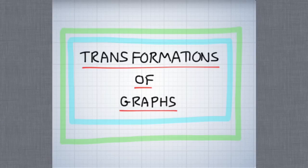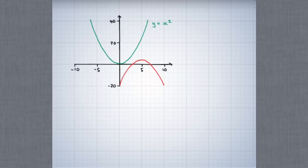This is a video about transformations of graphs, and in particular how to find the equation of a transformed graph by starting with the equation of the original graph and making changes to it. Here's an example. I've started with the graph of y equals x squared and transformed it. The question is: what's the equation of the transformed graph?